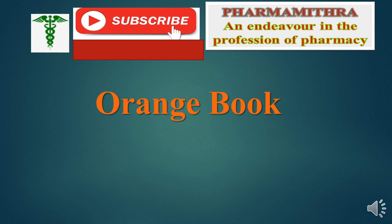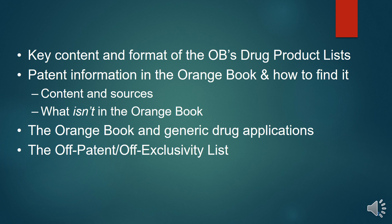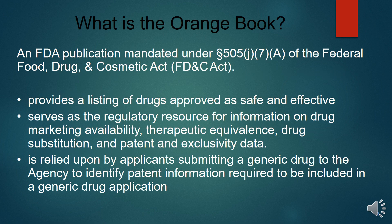Today we are discussing about the Orange Book, a term which appears in the eighth semester elective subject Regulatory Sciences. The Orange Book contains the drug product list, patent information, and it relates to the generic drug application as well as off-patent and off-exclusivity information.